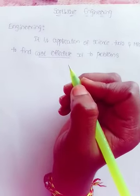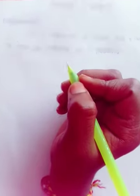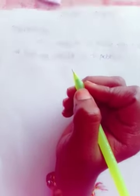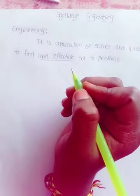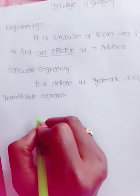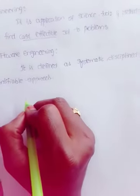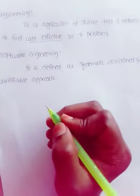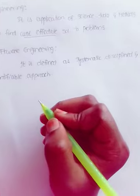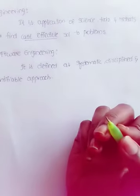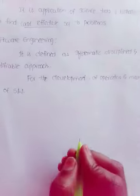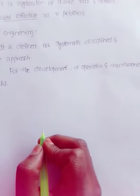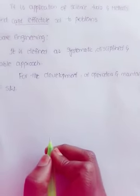Software engineering is defined as a systematic, disciplined, and quantifiable approach for the development, operation and maintenance of software. Each and every state follows systematic discipline and quantitative approach.